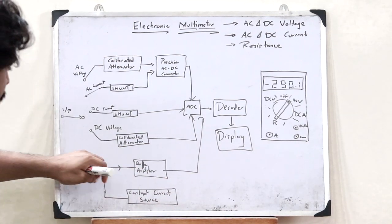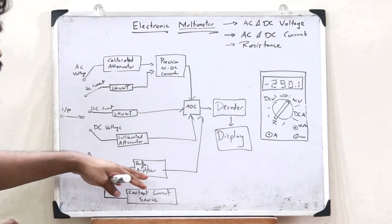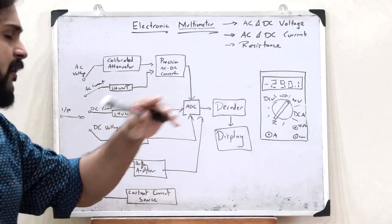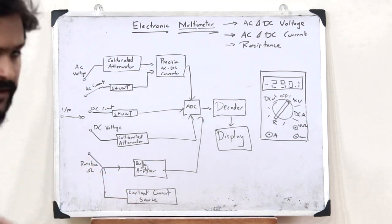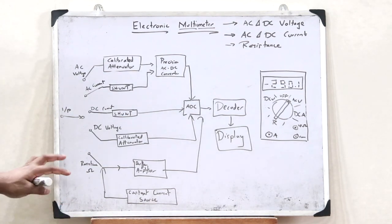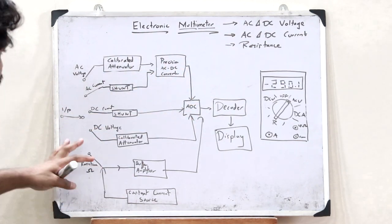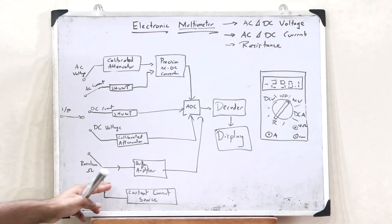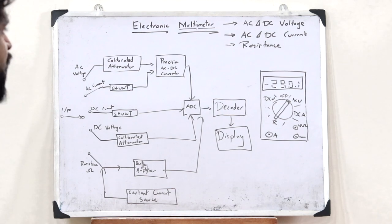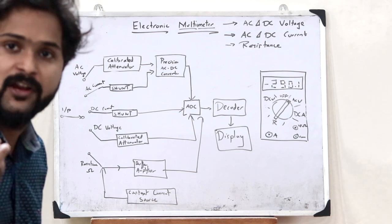In the case of resistance, it is passed through a buffer amplifier which is used to change the impedance, and this value is then passed through an analog to digital converter and obtained at the output display. This buffer amplifier is provided to reduce or eliminate the loading effect. A constant current source is also provided to the multimeter. This is simply how a particular electronic multimeter works.